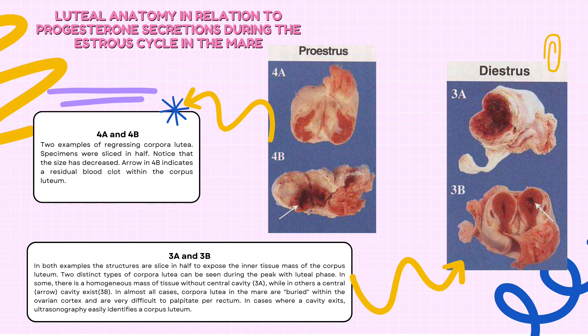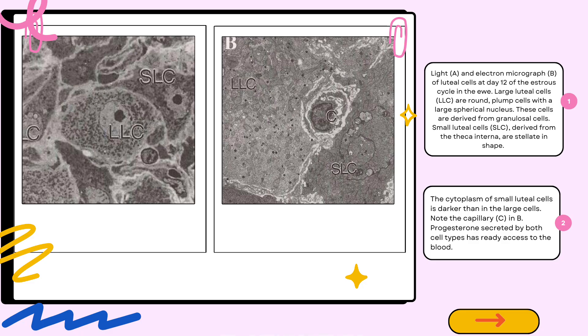Two distinct types of corpora lutea can be seen during the peak luteal phase. In some, there is a homogeneous mass of tissue without a central cavity (3A), while in others a central cavity exists (3B). Large luteal cells (LLC) are round, plump cells with a large spherical nucleus. These cells are derived from granulosa cells. Small luteal cells (SLC), derived from the theca interna, are stellate in shape. The cytoplasm of small luteal cells is darker than in the large cells. Note the capillary (C). Progesterone secreted by both cell types has ready access to the blood.